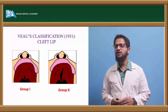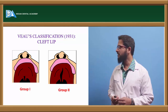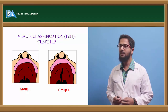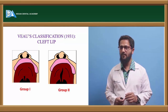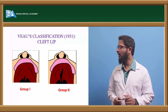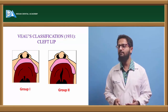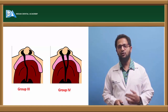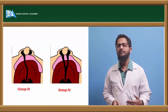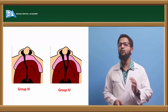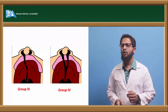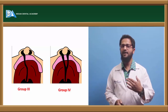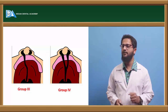The next classification was given in 1931 by Buu. Group 1 are clefts of only the soft palate. Group 2 are clefts of the soft palate and hard palate. Group 3 are clefts of the soft palate, hard palate, alveolars, and lip but unilateral. Group 4 are clefts of the soft palate, hard palate, alveolars, and lip but bilateral.